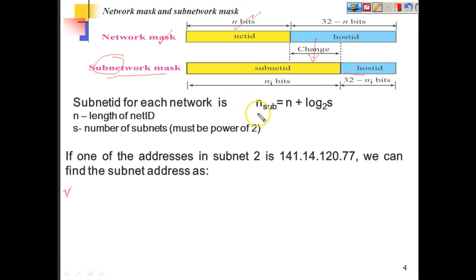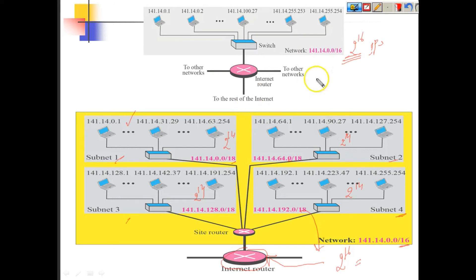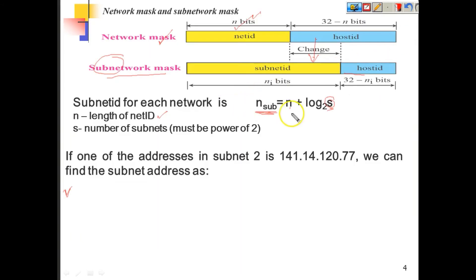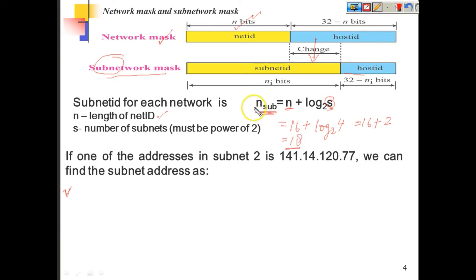We have a formula to find out the subnet mask. This is called N_sub — the bits assigned for the subnet mask — which equals N plus log S base 2, where N is the length of the network ID and S is the number of subnets required. In the previous case, we have 2 power 16 IPs and want to make 4 subnets. So the number of bits is 16 plus log 4 base 2, which is 16 plus 2, that is 18. So 18 bits will be in the subnetwork.